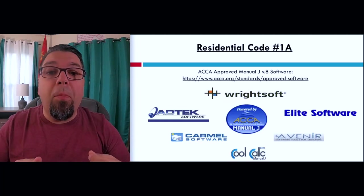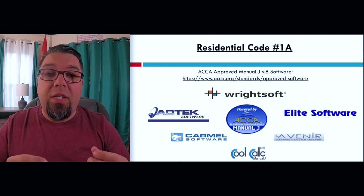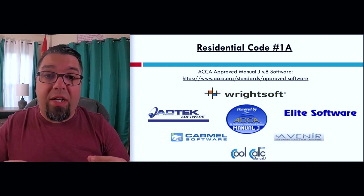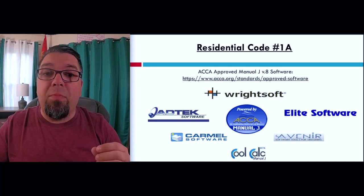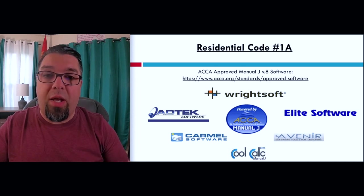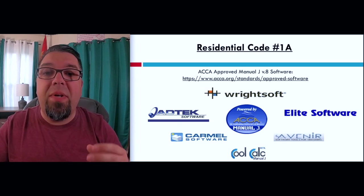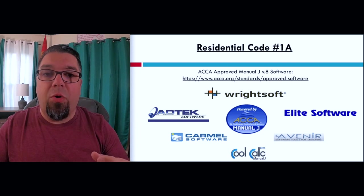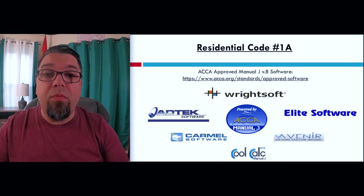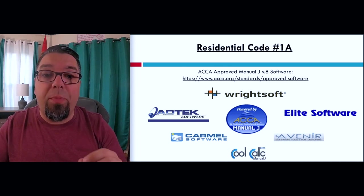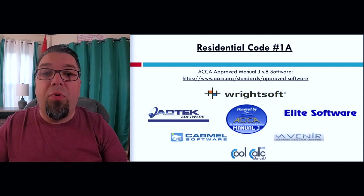You're going to most likely run across software that is ACCA Manual J approved — look for that logo — powered by ACCA Manual J software, and it's Manual J version 8. If it's based on Manual J and it doesn't have this seal, that means it's missing pieces. The best way to know that your software is approved is to go to the ACCA.org website, go to standards and click on approved software.